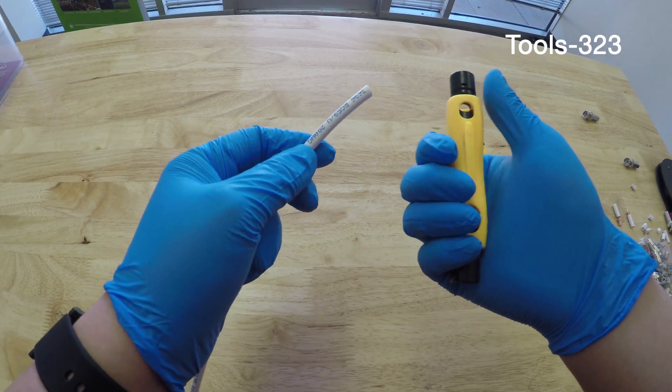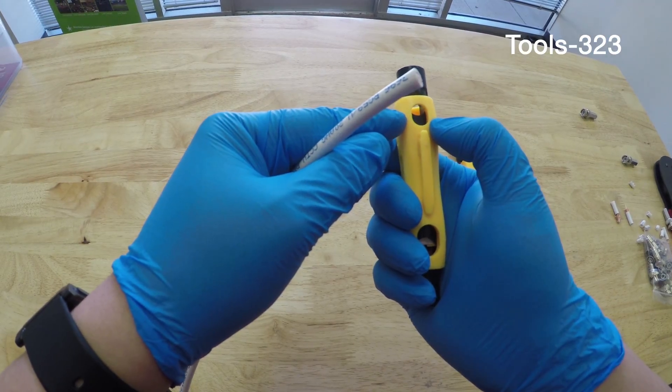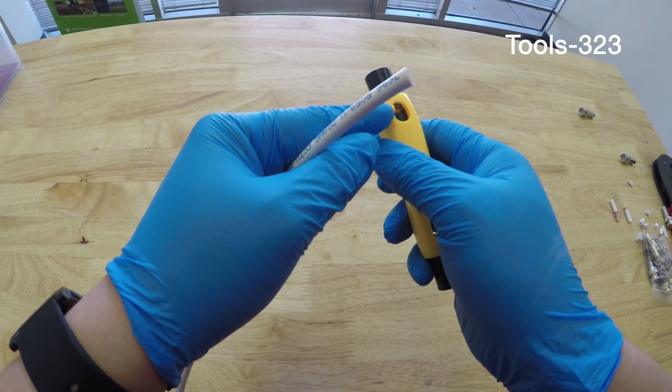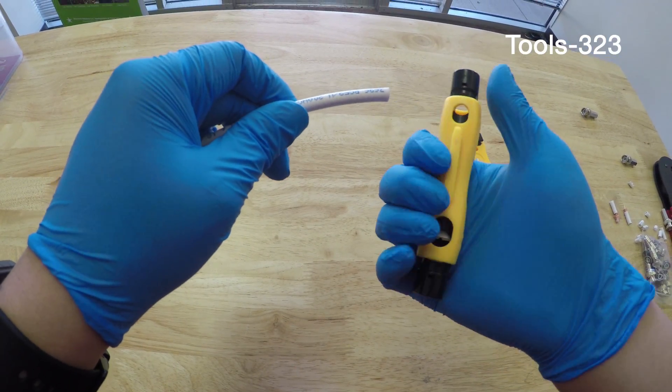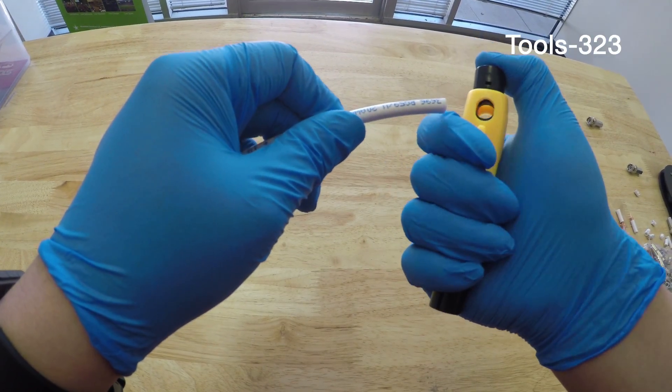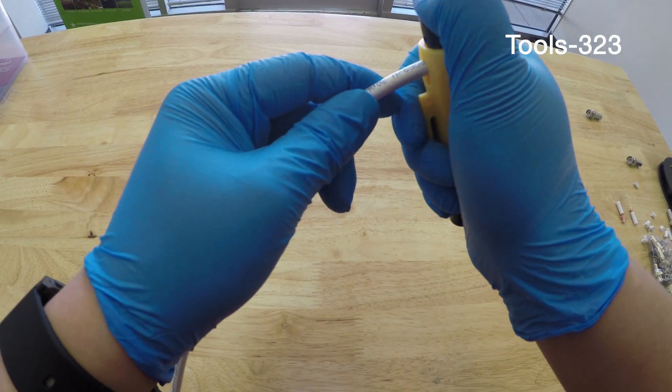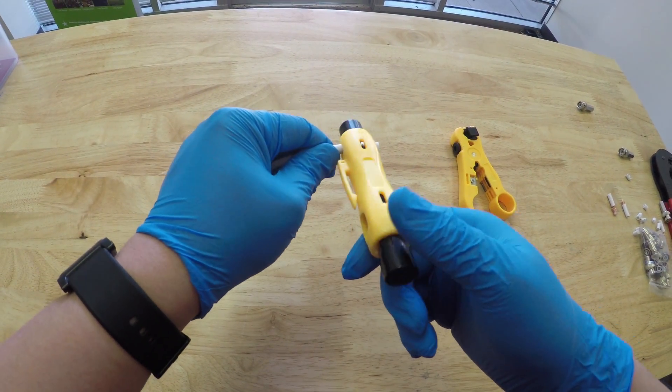There are two blades - one is for the jacket and the other is for the insulation. To strip the RG59 cable, make sure the cable is inserted correctly into the tool, and then you want to rotate the tool around the cable and then pull the tool away.